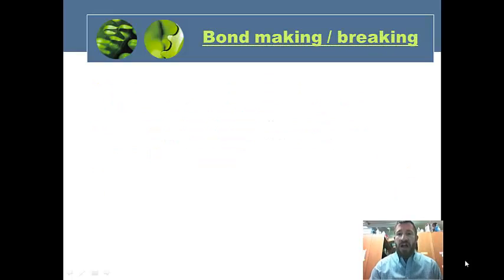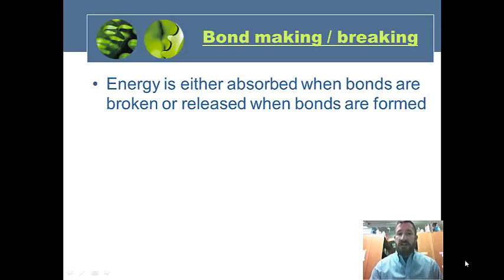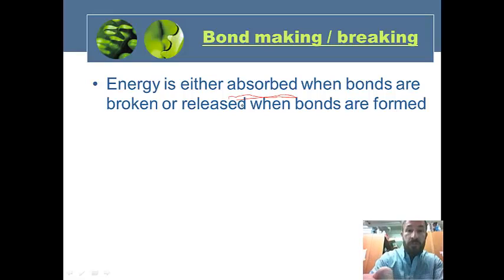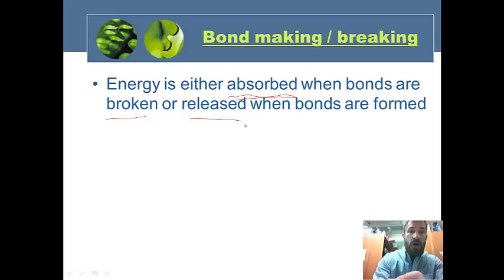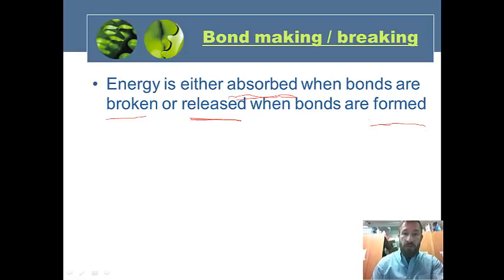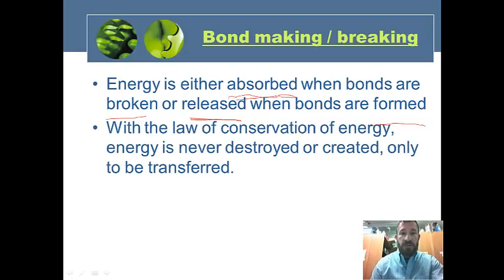Bond making and bond breaking is important, and energy is stored in bonds in chemical reactions. Energy is either absorbed when bonds are broken, or it's released when bonds are formed. The law of conservation of energy states that energy is never created or destroyed — it's only transferred.